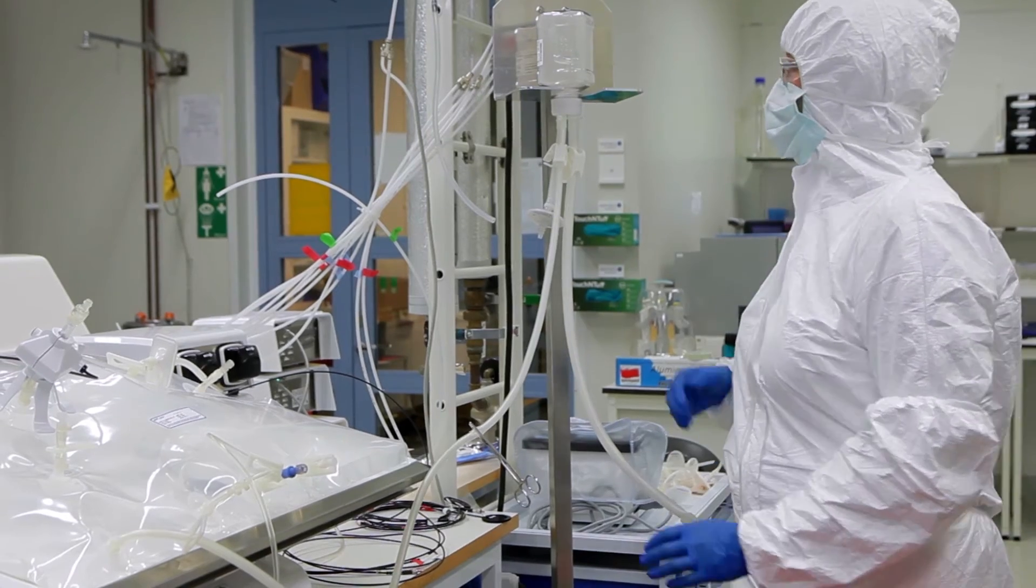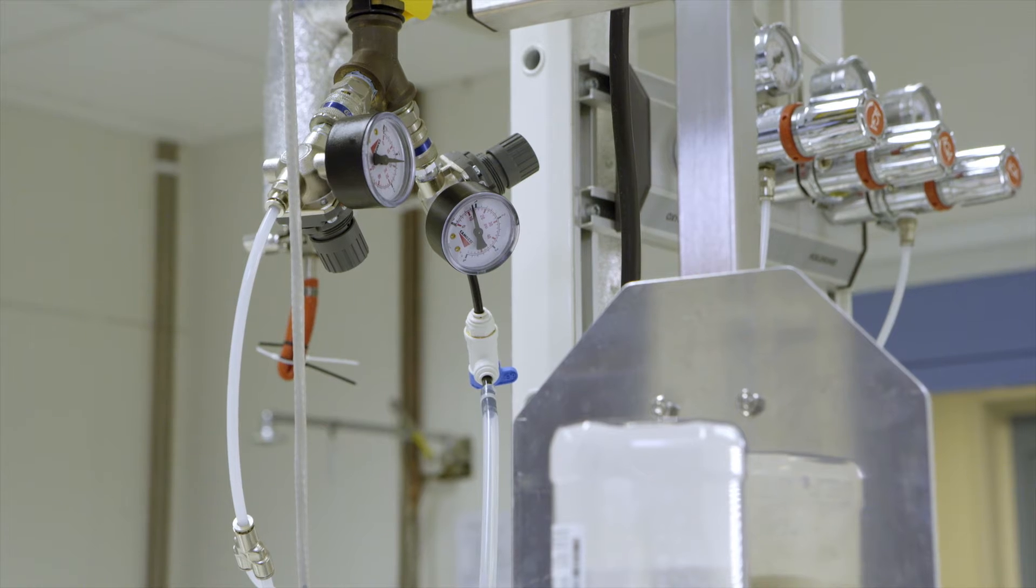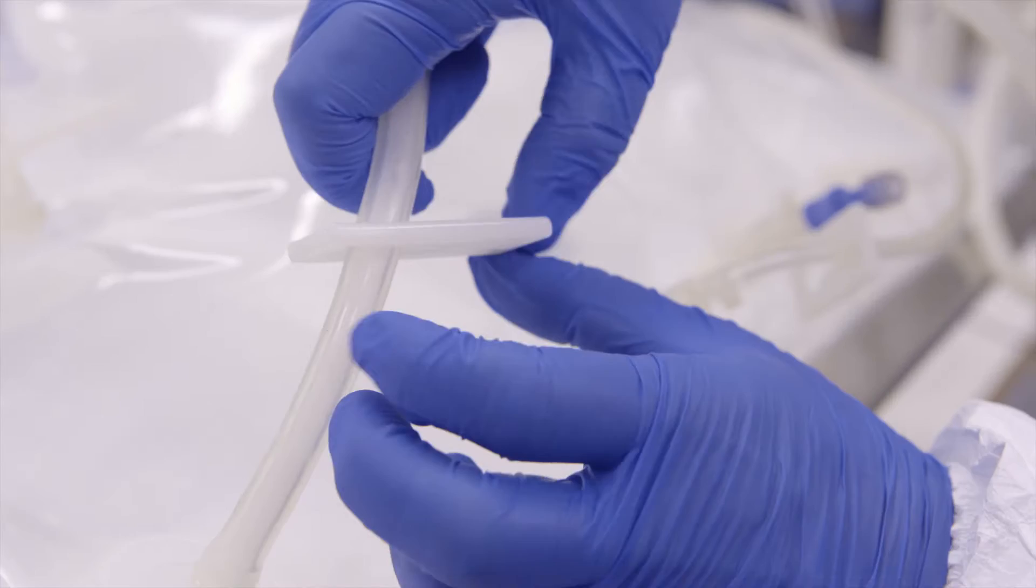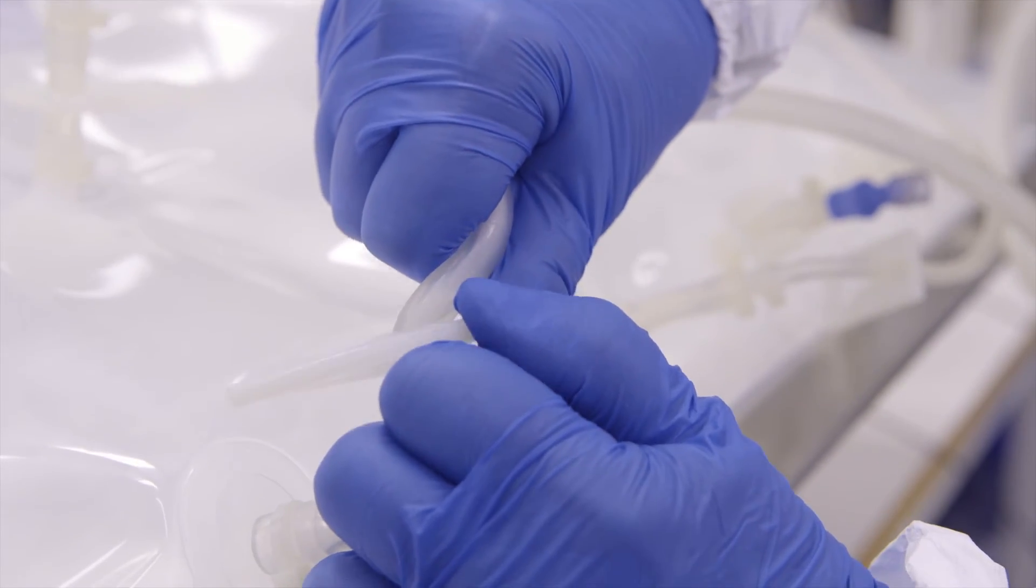Check that all microcarriers have been transferred out of the container by tipping it back and forth. Close the gas pressure and disconnect the gas line. Close the transfer lines both on the bioreactor and on the container.